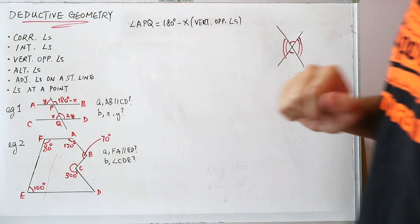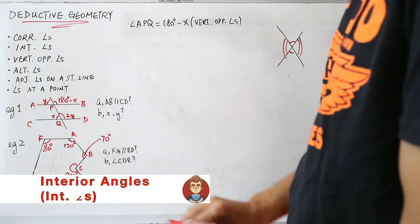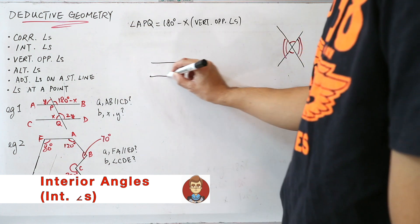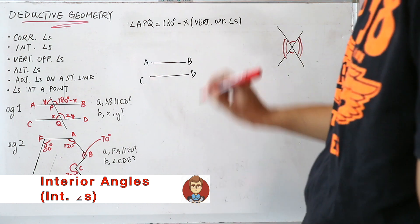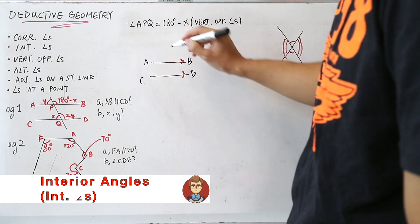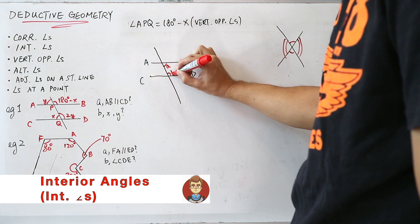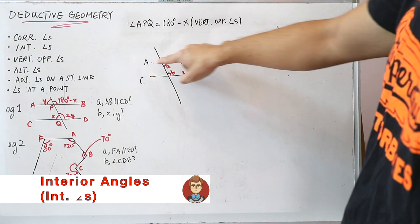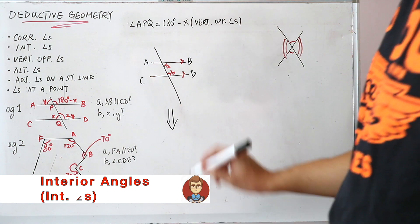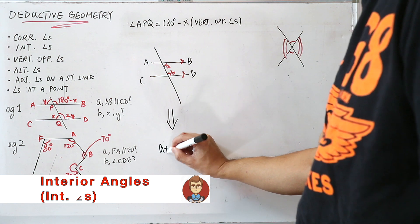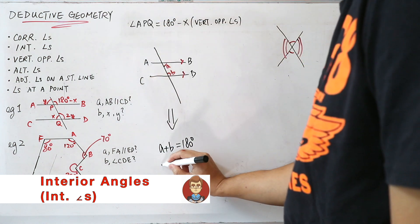After this, the next thing you need to know is interior angles. If the question tells you that two lines AB and CD are parallel, and you call the co-interior angles A and B, then you can draw a conclusion: A plus B is equal to 180 degrees. The reason is interior angles.